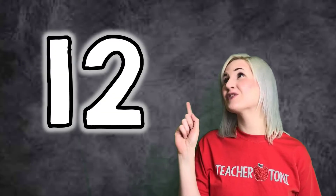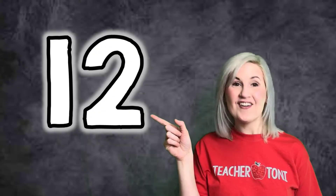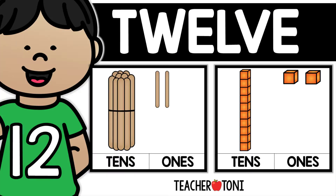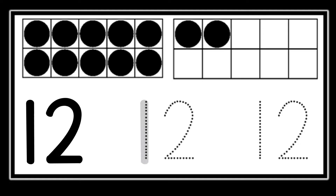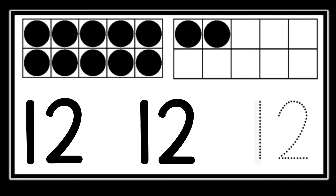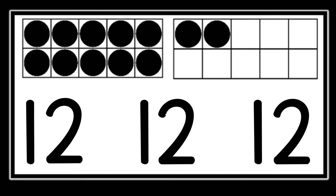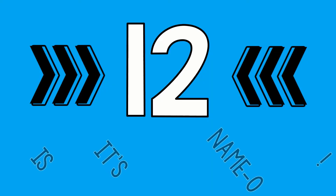Number 12. I can write a teen number. 12 is its name. Oh, 1, 2, 1, 2, 1, 2. 12 is its name.